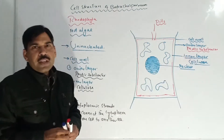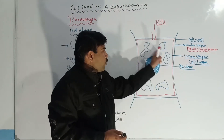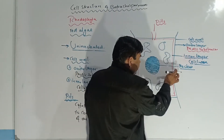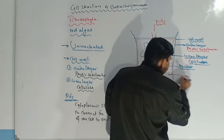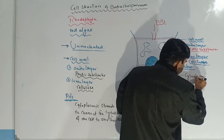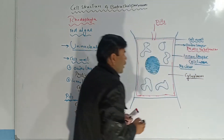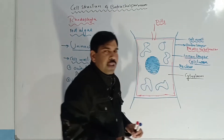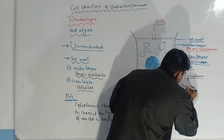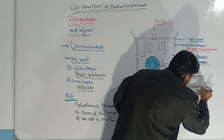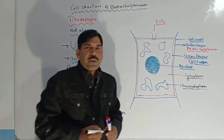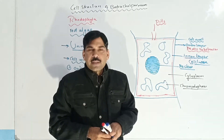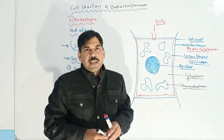These are irregular disc-like structures which are present outside the nucleus and inside the cytoplasm, between the cell membrane and cell wall. These structures are known as chromatophores. Chromatophores are color-producing structures which give the specific or characteristic color to the plant body or thallus of Batrachospermium.